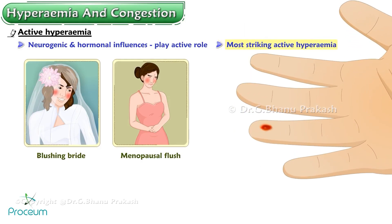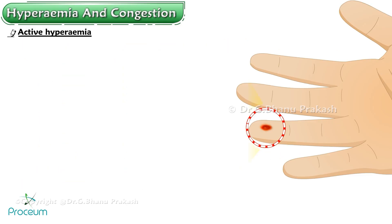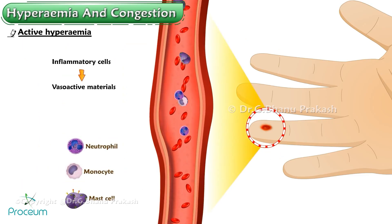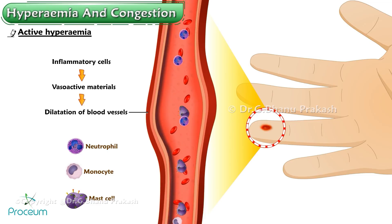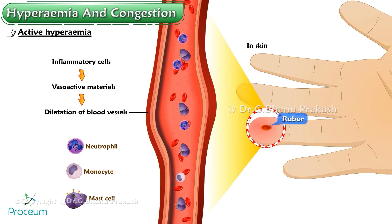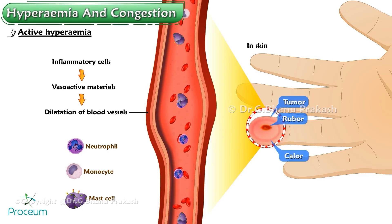The most striking active hyperemia occurs in association with inflammation. All active hyperemia is acute in nature; chronic active hyperemia does not occur. Vasoactive materials released by inflammatory cells cause dilation of blood vessels in the skin, contributing to the classic rubor, tumor, and calor of inflammation.